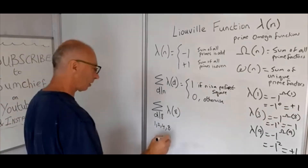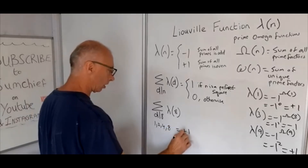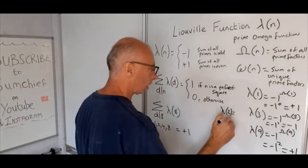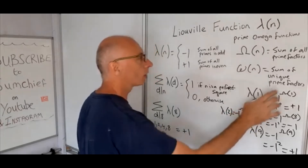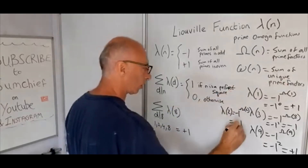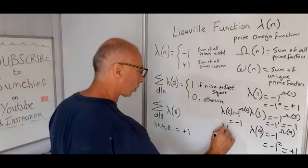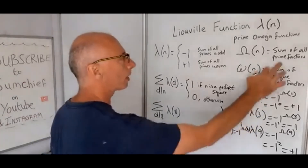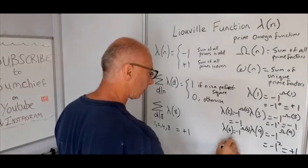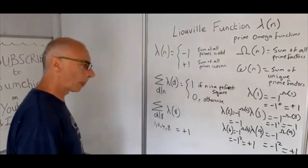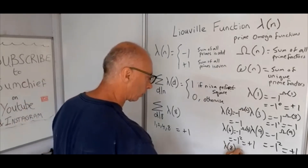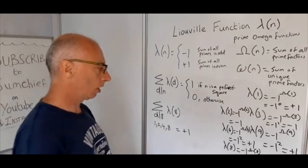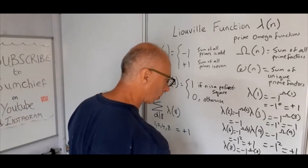The Liouville function for 1 we've already done: that is +1. For λ(2) = (-1)^Ω(2): 2 has only 1 prime factor, so that equals -1. For λ(4) = (-1)^Ω(4): 4 = 2², so it has 2 prime factors, giving (-1)² = +1. For λ(8) = (-1)^Ω(8): 8 = 2×2×2, so that's 3 prime factors, giving (-1)³ = -1.